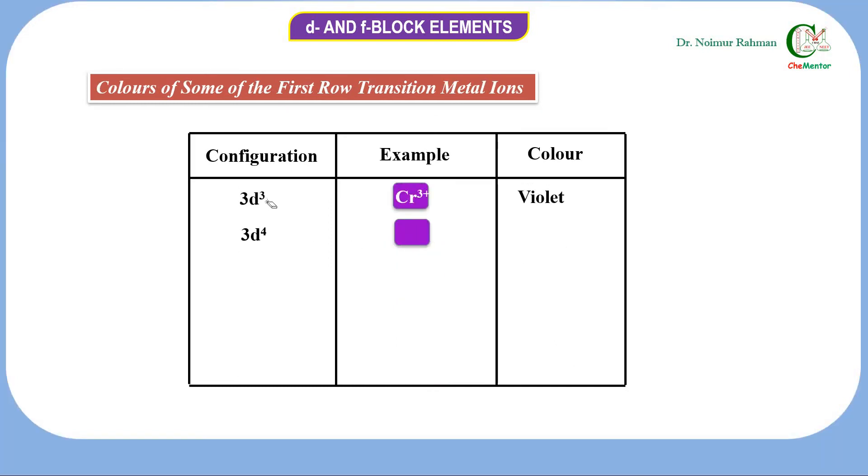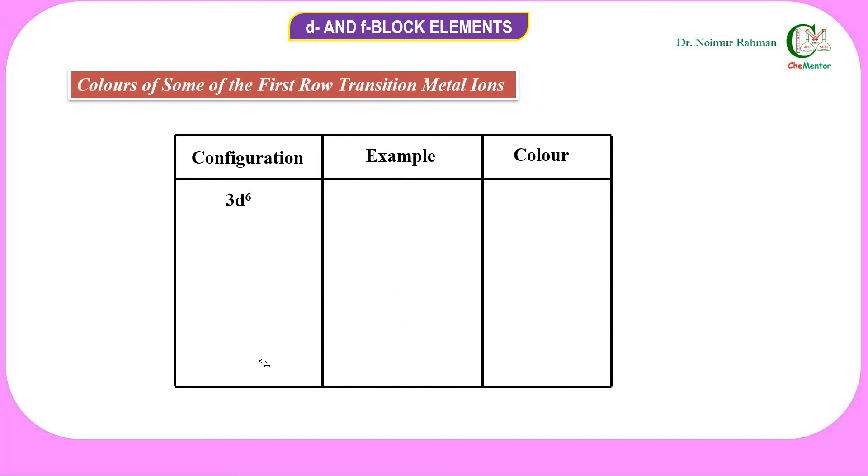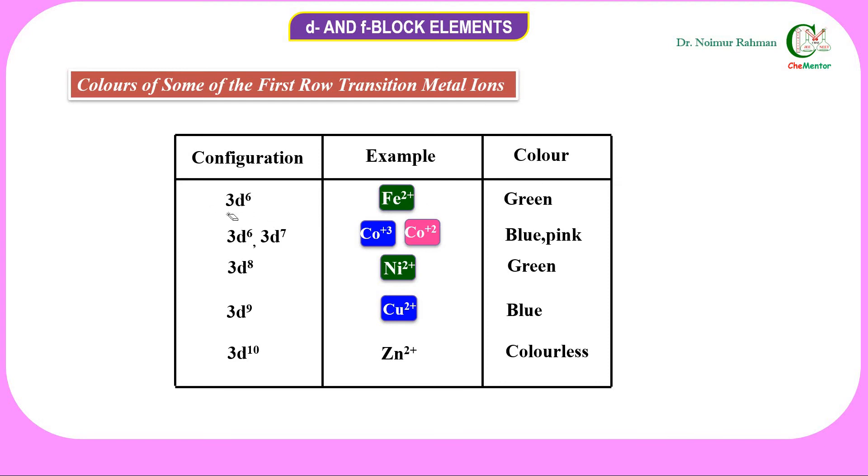Similarly, Cr³⁺ is a d³ system and shows violet color. Fe³⁺ is yellow in color due to the presence of 5 d electrons in 3d subshell. Color appears due to the presence of partially filled d-electrons.